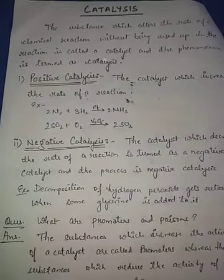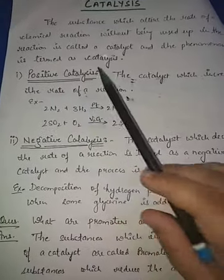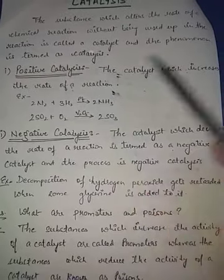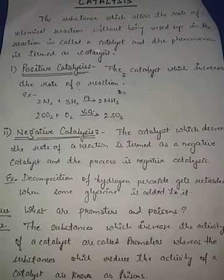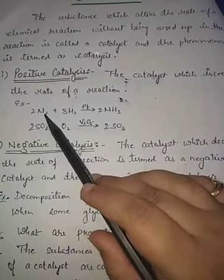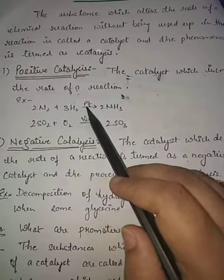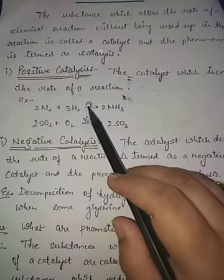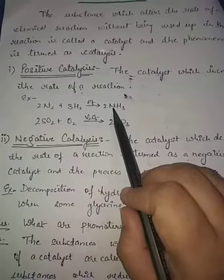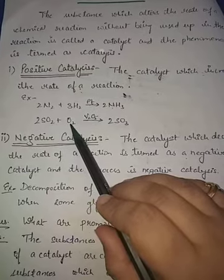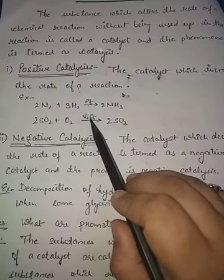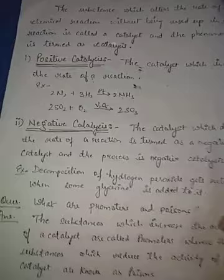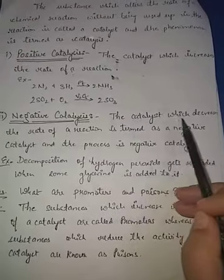Now, positive and negative catalysis. Positive catalysts are those which increase the rate of reaction, and the process is called positive catalysis. For example, when nitrogen and hydrogen are mixed with platinum, platinum enhances the rate of the chemical reaction and makes it faster, forming ammonia. Similarly, when sulfur dioxide and oxygen are used with V2O5 (vanadium pentoxide), it acts as a positive catalyst and SO3 is formed.